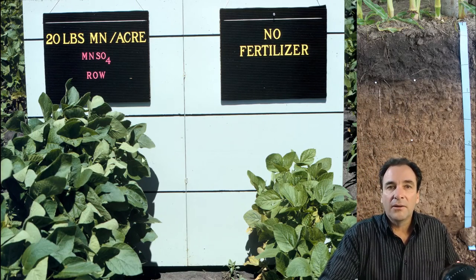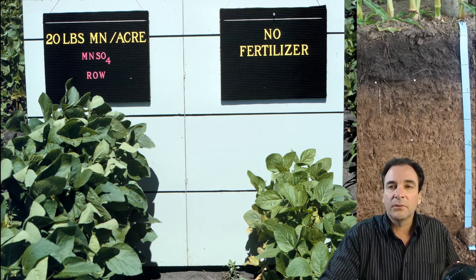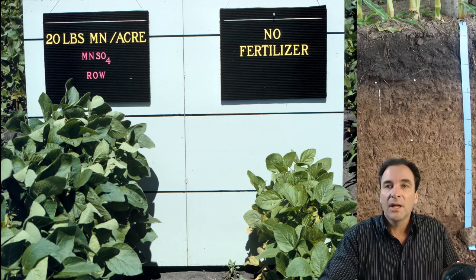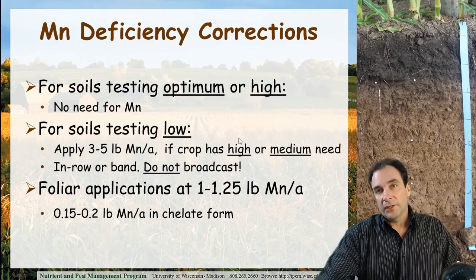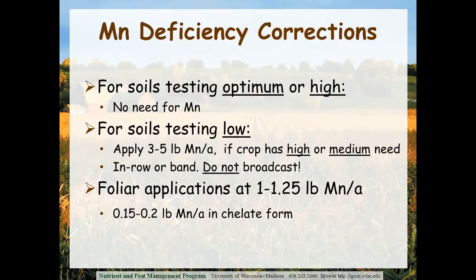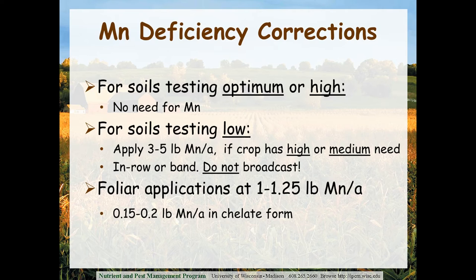Here's another shot of manganese deficiency showing you the interveinal chlorosis — it's going to be concentrated on the younger top leaves at the top of the plant. A wider-angle view shows a soybean plant adequately fertilized for manganese next to one where manganese was not applied on a soil that needed it — you can see the stunted, smaller appearance of the deficient soybean crop. For corrections: for soils testing optimum or higher, no need for manganese. For soils testing low where the crop has a high or medium need, you can apply three to five pounds of manganese per acre. Manganese should be applied either in-row or band applied, not broadcast applied, because manganese can very quickly be tied up in the soil if broadcast. Foliar applications can also be applied.